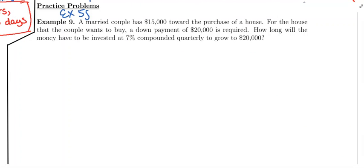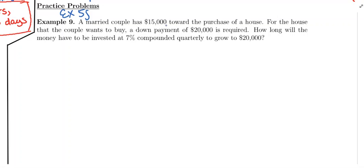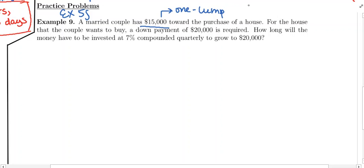This married couple is trying to purchase a house and the down payment is twenty thousand dollars. They actually have fifteen thousand dollars right now, and they're going to invest the fifteen thousand dollars at seven percent interest compounded quarterly. They want that fifteen thousand dollars to grow to twenty thousand dollars, and they're just trying to figure out how long that's going to take. Since they're saving one lump sum in a savings account and having that grow, that makes this a compound interest problem.